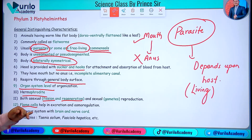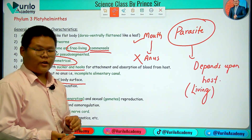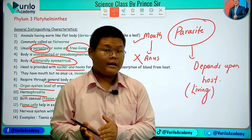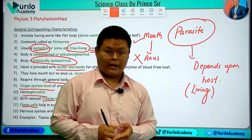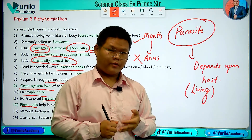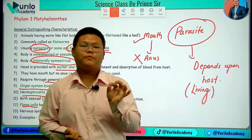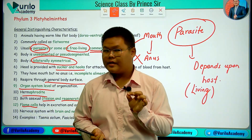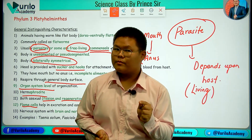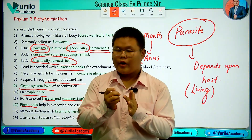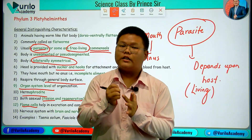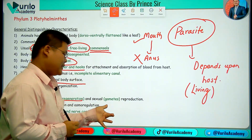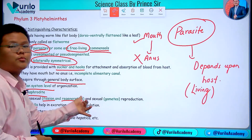The excretory system is important. The excretory organs are flame cells, which are used for osmoregulation. Osmoregulation means balancing water, salt, and salt concentration in the body — just like osmoregulation.